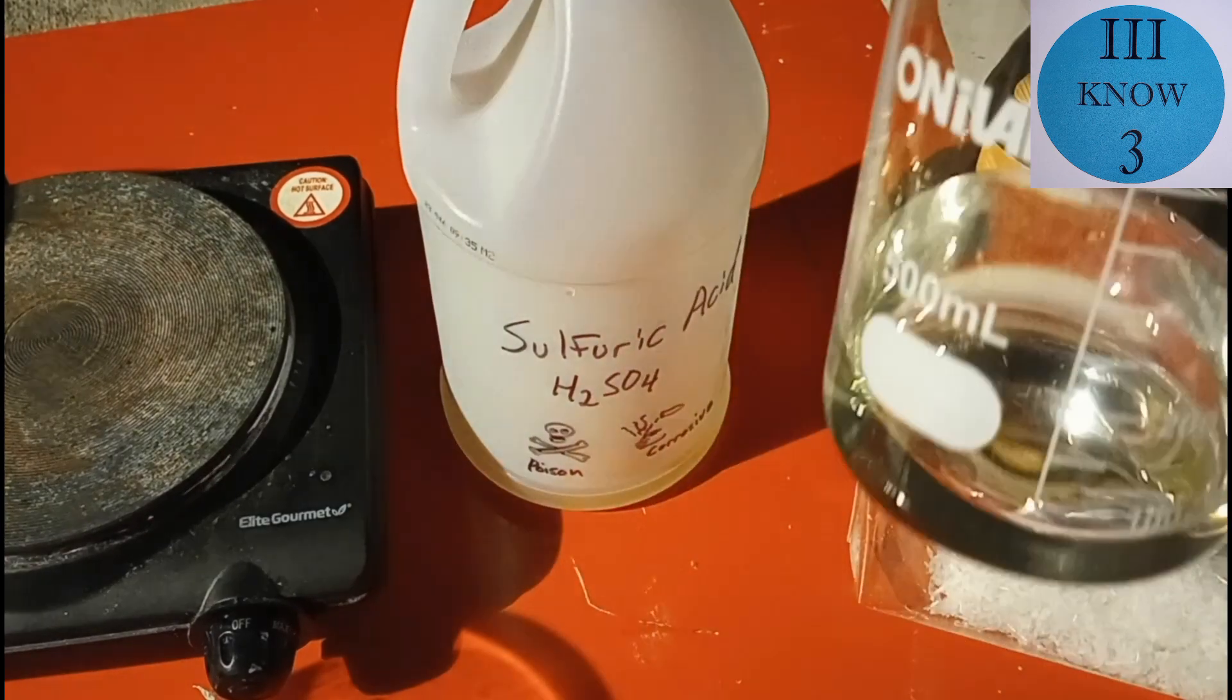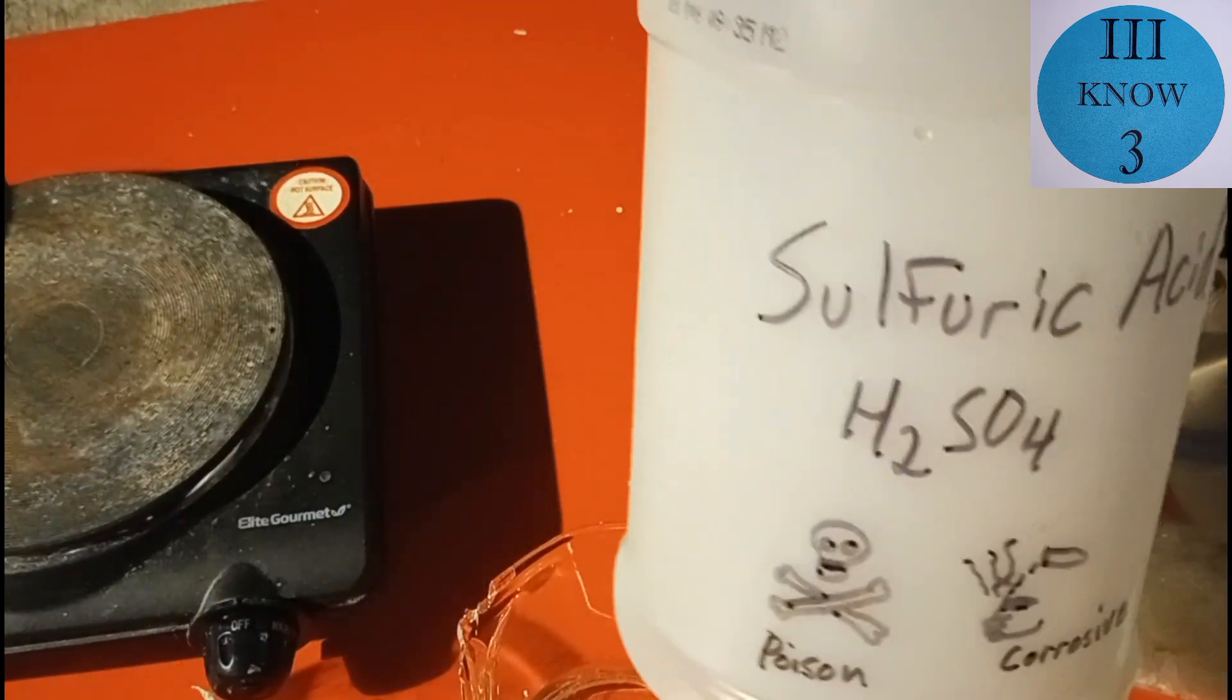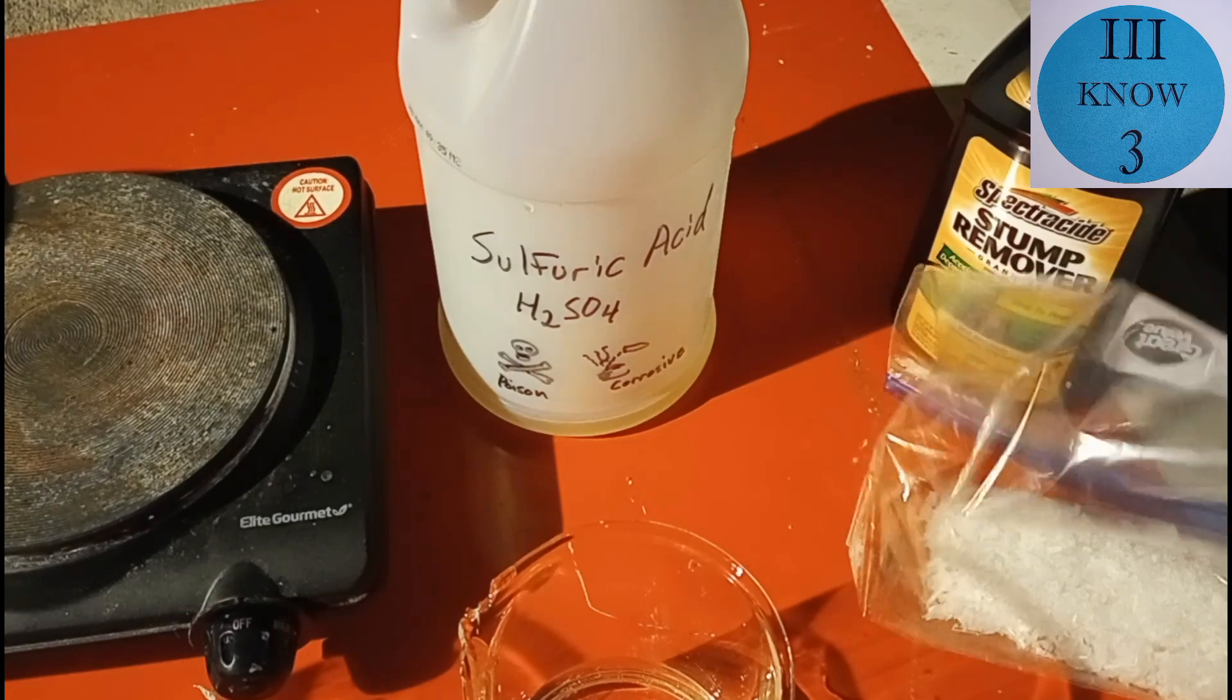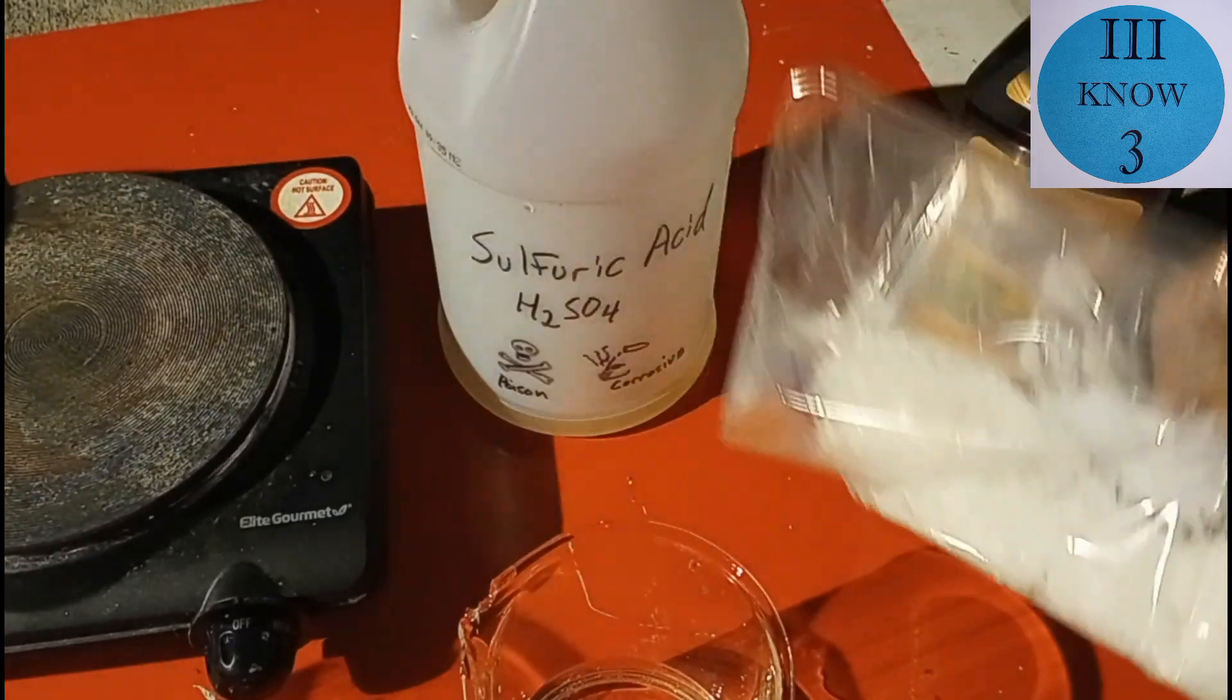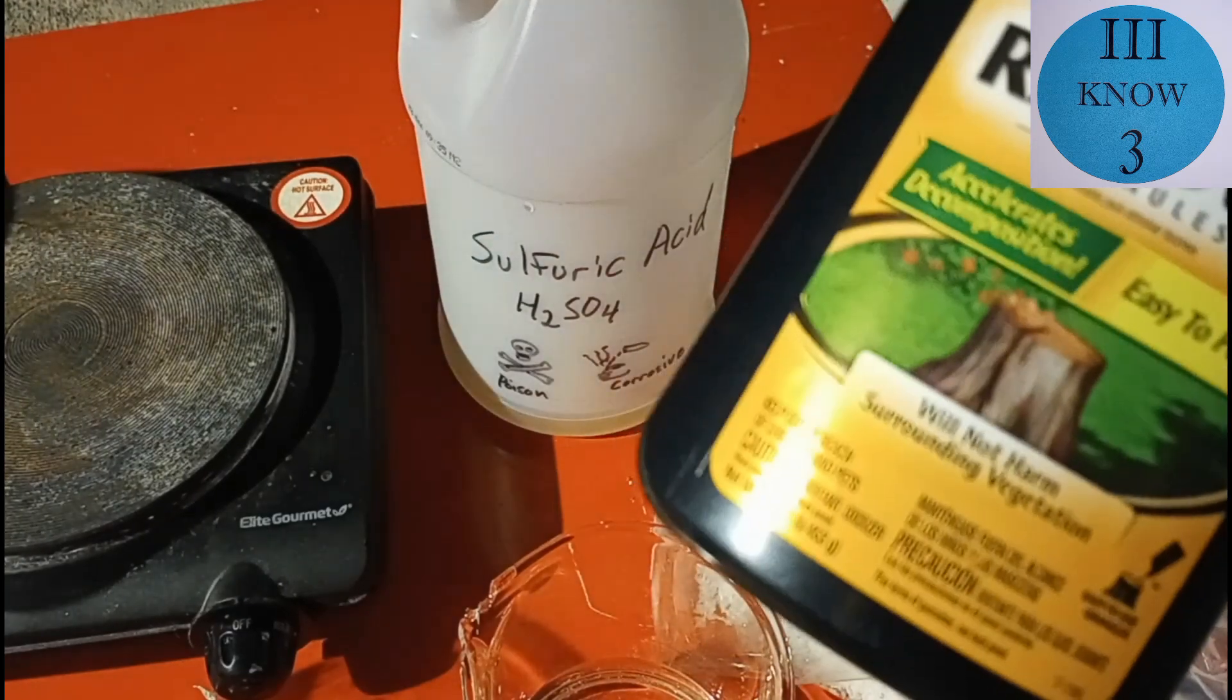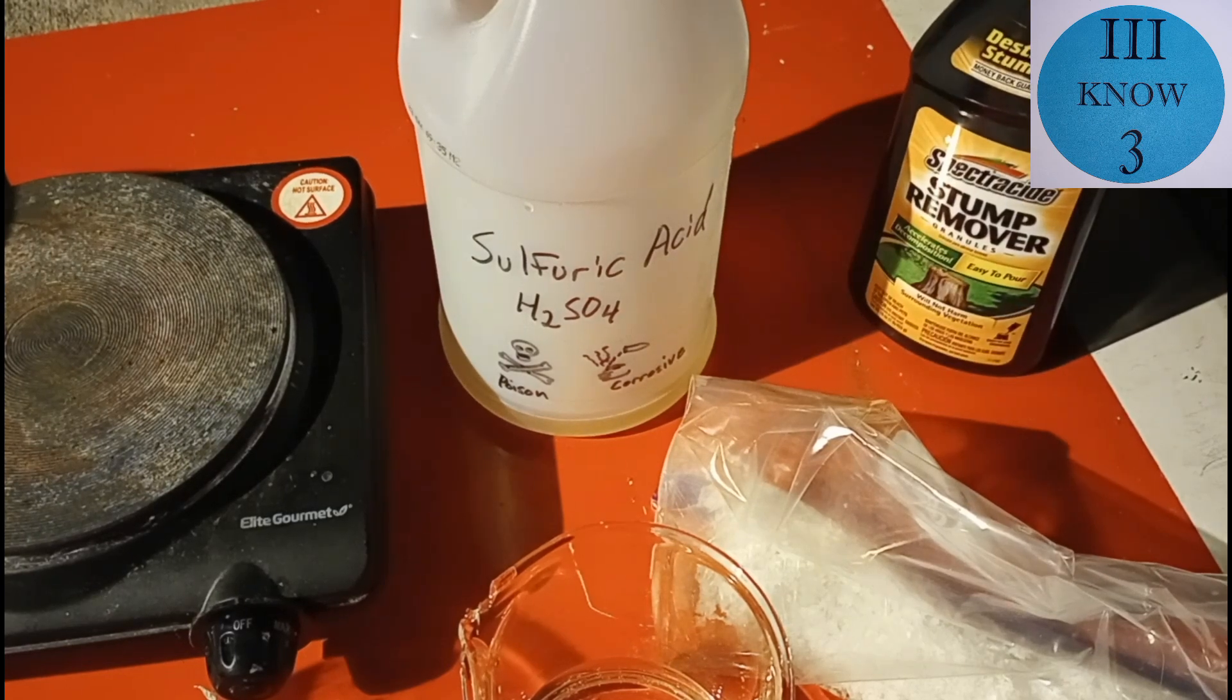So I have here measured out 150 milliliters of sulfuric acid. This is sulfuric acid that I purified in a sulfuric acid project video. And this is crystallized potassium nitrate. Very pure. It was actually crystallized from the Spectracide stump remover, which in and of itself is actually fairly pure potassium nitrate.